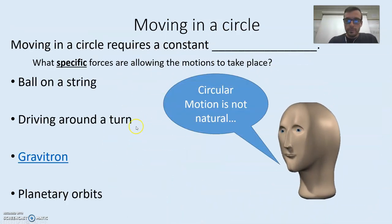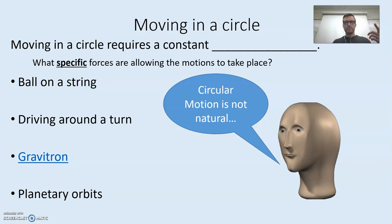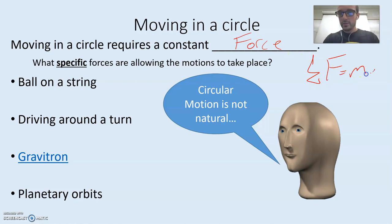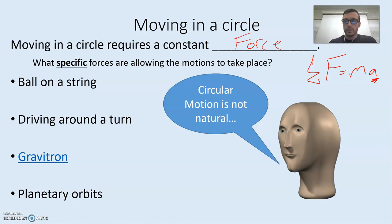If you move in a circle, that is not a natural thing to do. It is not natural — if you just throw something, it's not going to start moving in a circle all by itself. Moving in a circle requires a constant force. As we covered in our last two units, in order for an object or a mass to accelerate, you have to have an unbalanced force. So there's going to be an unbalanced force needed in order to move in a circle.